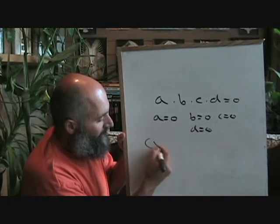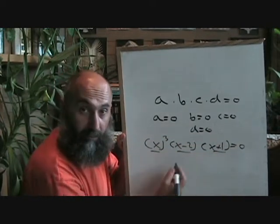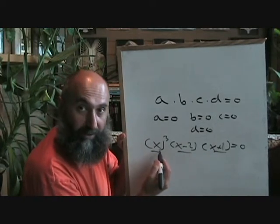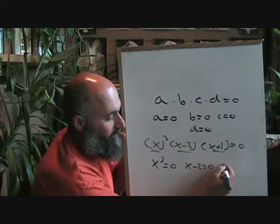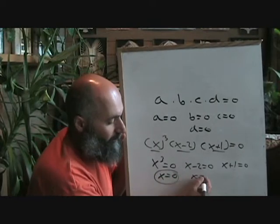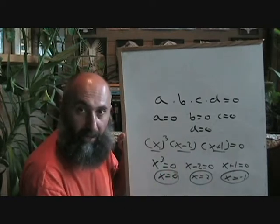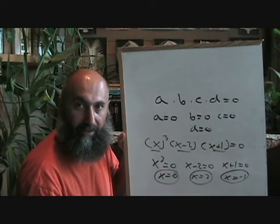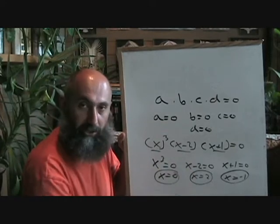For example, if we have x³ times (x minus 2) times (x plus 1) equal to zero, we've got three terms multiplied together giving zero. We set each one equal to zero: x³ = 0, x minus 2 = 0, x plus 1 = 0. Solving these gives us x = 0, x = 2, and x = negative 1 as solutions. This is a very powerful property of zero that we use in the language of mathematics to solve equations and get information about a function.